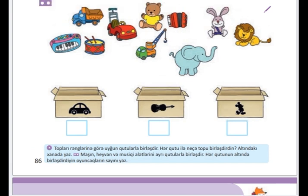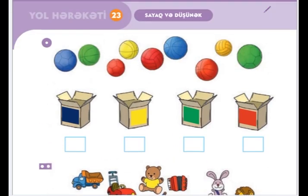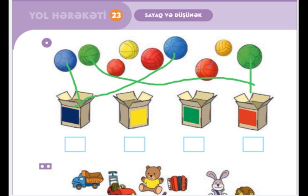Topları rənglərinə görə uyğun qutularla birləşdirir. Hər qutu ilə neçə topu birləşdirir, altındakı xanada yaz. Uşaqlar, bu dəfə biz rənginə görə qruplaşdırıq. Bir az əvvəl figurları formasına görə qruplaşdırdıq. Burada isə rənginə görə - göy top, yaşıl top. Deməli, iki yaşıl top var, iki göy top var.